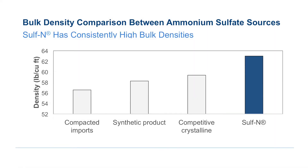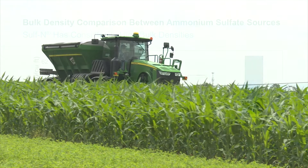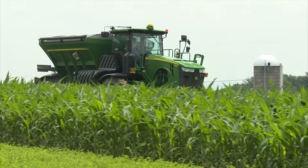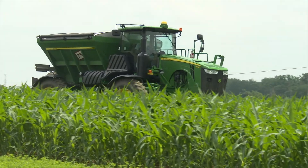Bulk density is also important since it influences the spreading characteristics of a product. For a given particle size, the heavier the particle, or higher bulk density, the further it will travel for a given release speed. All these characteristics influence the spread pattern of a fertilizer blend.